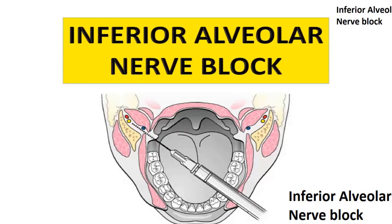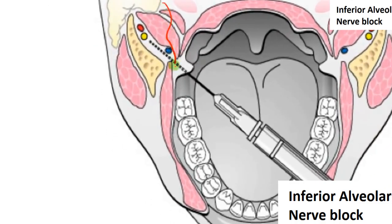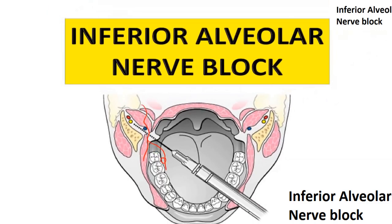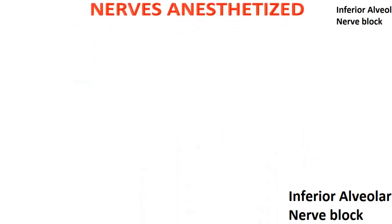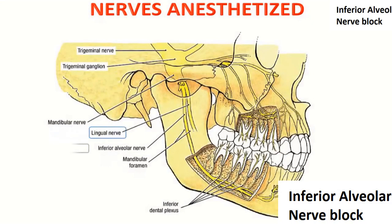Now discussing the inferior alveolar nerve block. The inferior alveolar nerve is a branch of the mandibular nerve, which is the third division of the trigeminal nerve. The nerve is anesthetized prior to its entry into the mandibular foramen. The nerves anesthetized include the lingual nerve, inferior alveolar nerve, inferior dental plexus, mental nerve, and the incisive nerve.